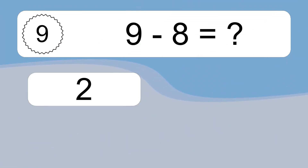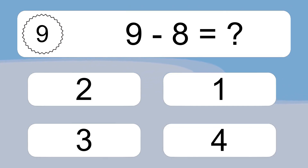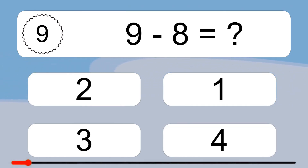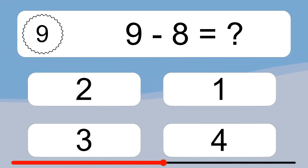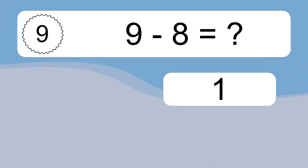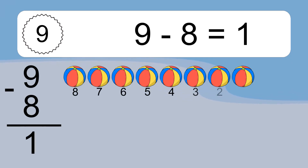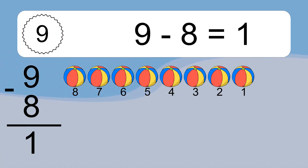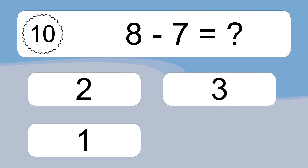9 minus 8 equals what? 9 minus 8 equals 1. Let's count it. 8, 7, 6, 5, 4, 3, 2, 1.